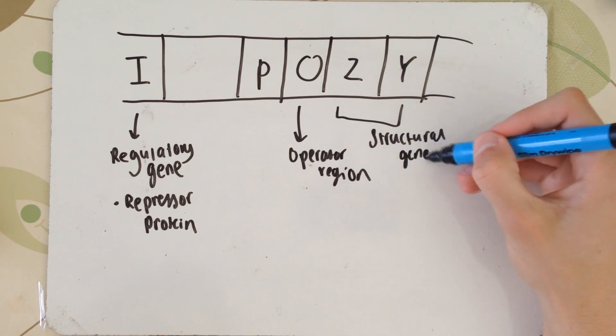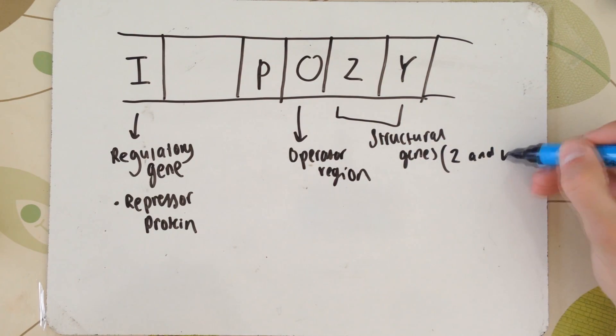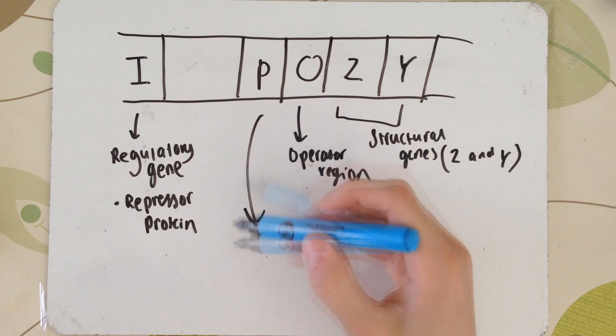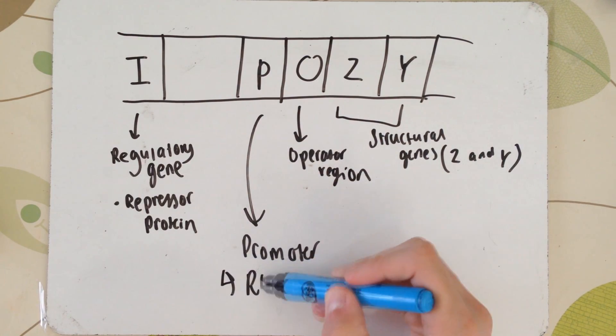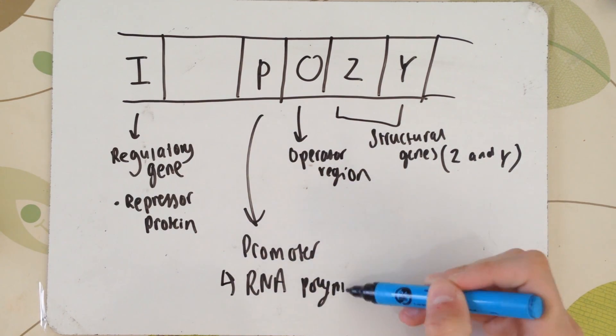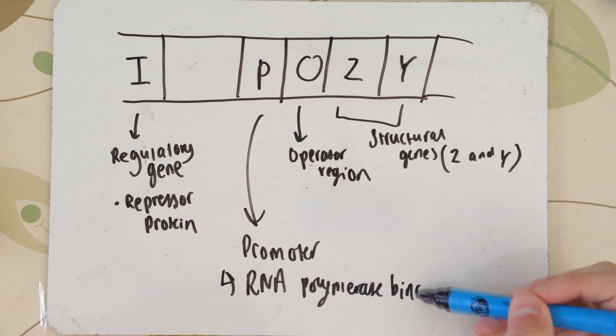And your operator region has the power to turn these genes on and off. And finally, we have P, our promoter region. This is basically a length of DNA in which RNA polymerase binds to and this allows it to begin the transcription of the structural genes which are Z and Y.